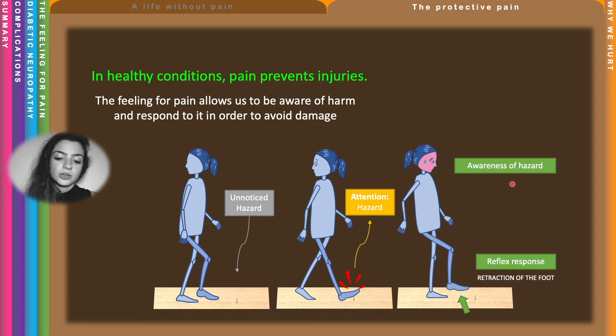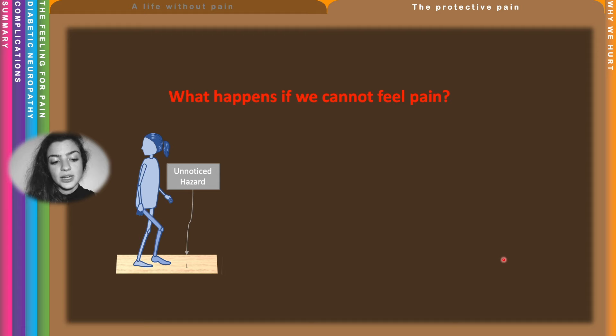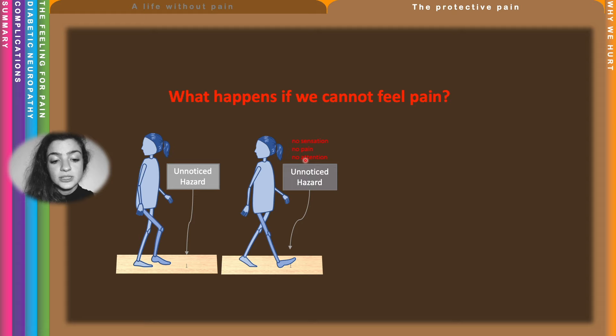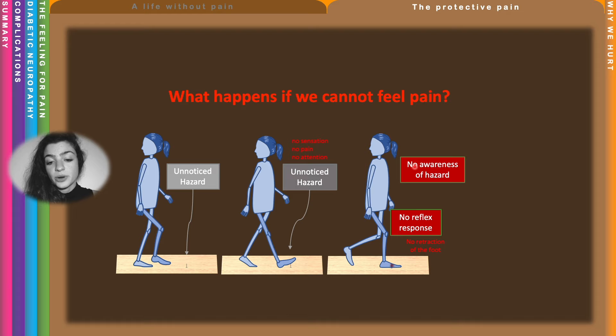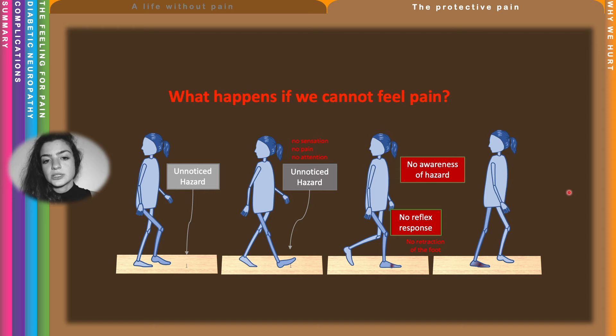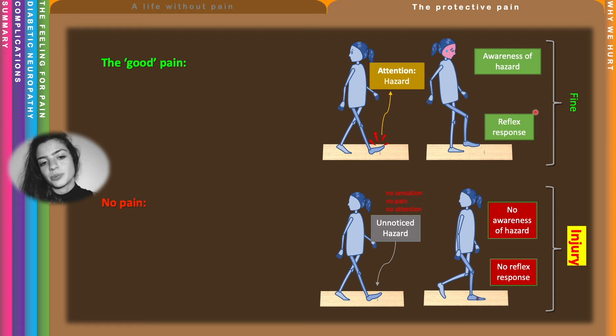If we cannot feel pain, the object goes unnoticed — there is no sensation, no pain, no attention to it, and it will not trigger any reflex responses. You won't be aware of it, so you continue to walk normally as if nothing is happening, and the object penetrates deeper and deeper at every step. So in this same example, pain prevented an injury; without pain there is injury because there is no awareness of hazards and no reflex responses.